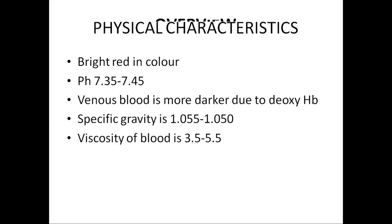The physical characteristics of blood: blood is bright red in color due to oxygenated hemoglobin. The pH of the blood ranges from 7.35 to 7.45. If the pH is less than 7.35, the blood is acidic, and if the pH is more than 7.45, the blood is more towards the alkaline side. Naturally, the pH of the blood is slightly towards the alkaline side. Venous blood is darker due to deoxygenated hemoglobin.